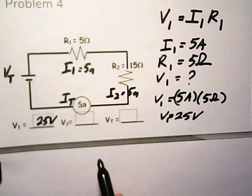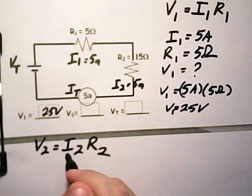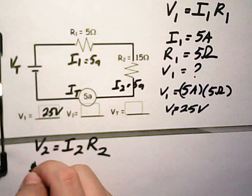Okay, for V2, we are solving for this area right here. We know that V2 is equal to I2 times R2. Our R2 is given here as 15 ohms. I2 is five amps because it's the same as everywhere else.